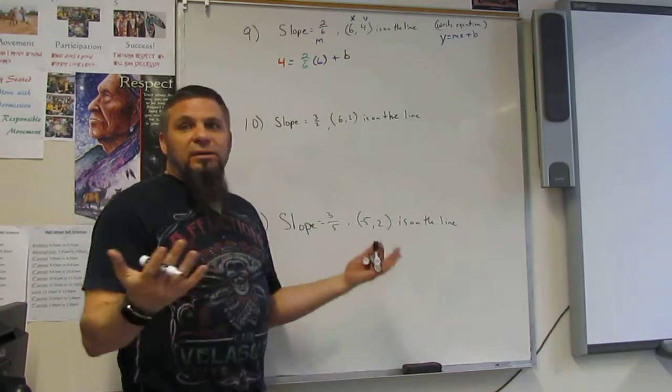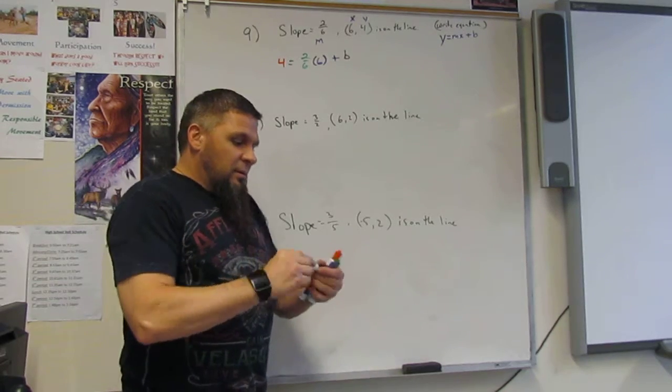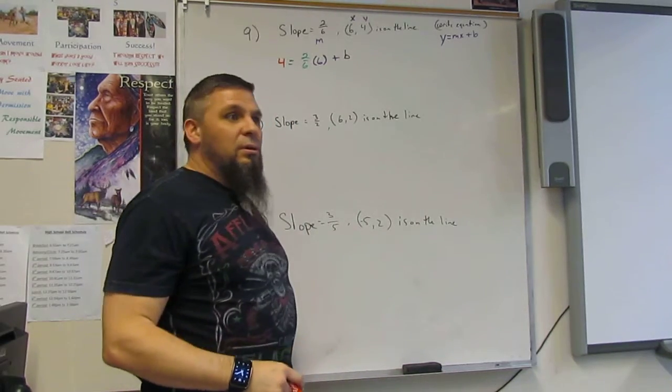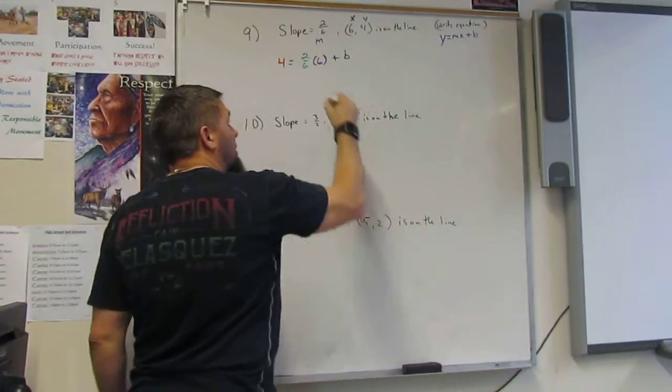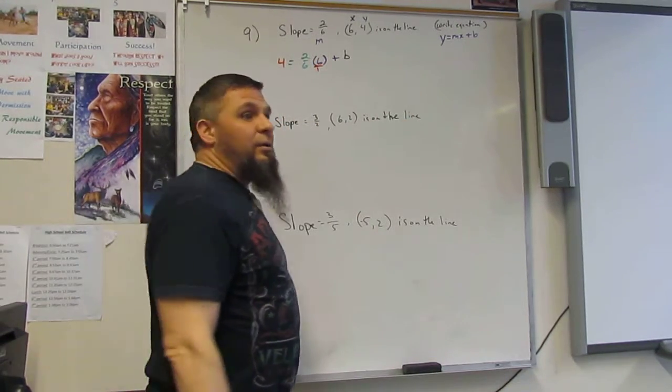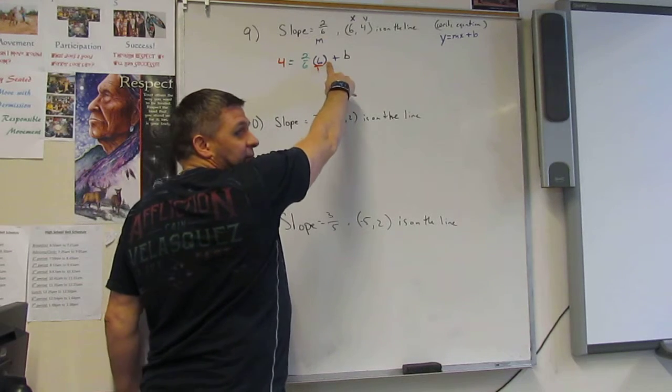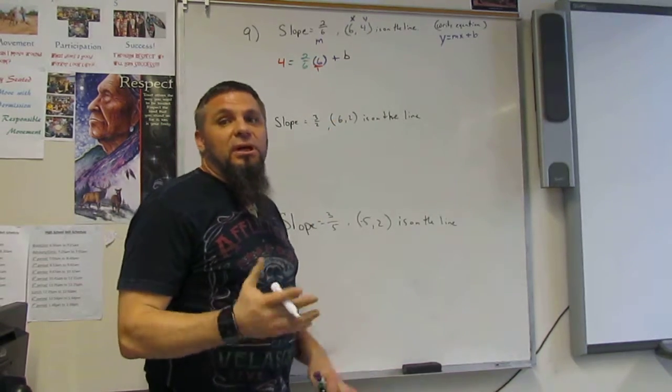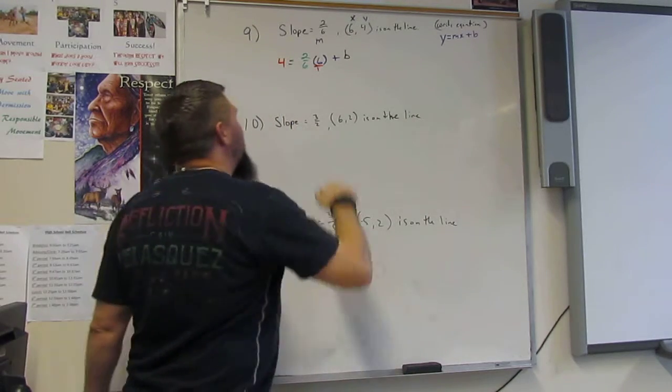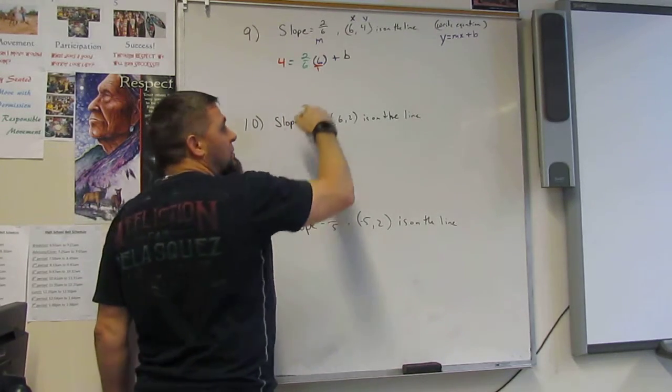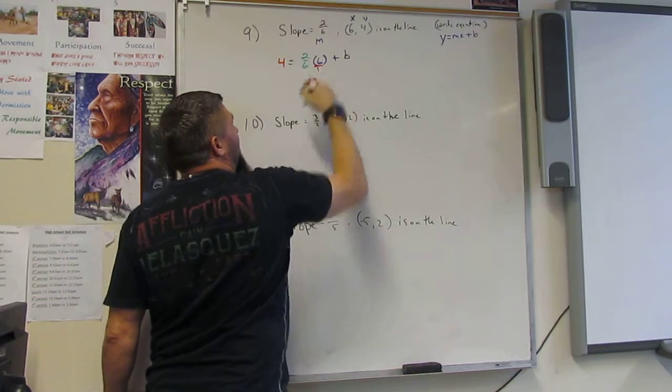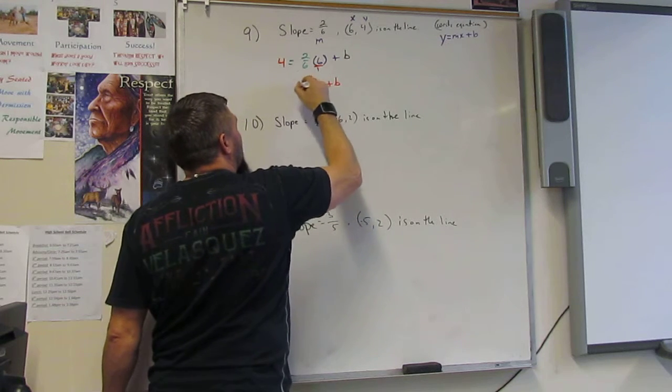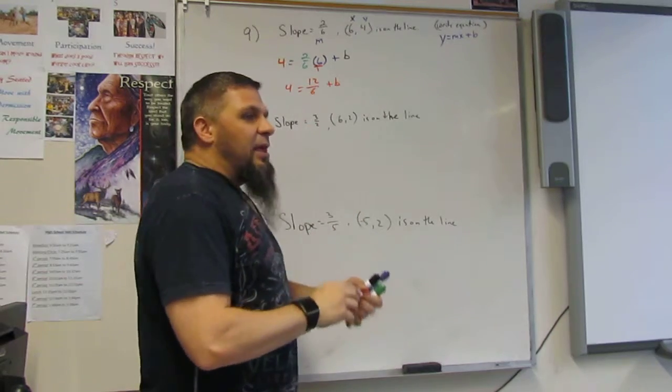This is back to the regular algebra, right? Now, look. If you have just a 6 and you're times by a fraction, what is your key? What should you do? Put a 1 under it. Now, does 6 go into 6? Yes. So you have to cross those out. But whenever I do that, for some reason, it confuses students. So I'm going to take it a step further into this. But what's 6 times 2? 12. And what's 6 times 1? 6. 6 plus b, right? Equals 4. And then break it down.